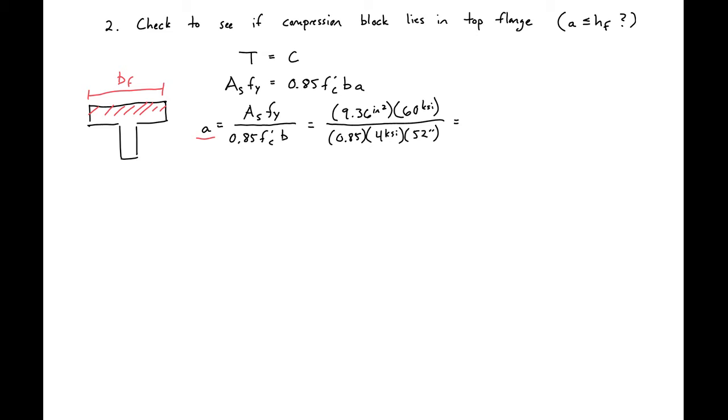We can find our a to be equal to 3.18 inches. So we can see that our a, 3.18, is greater than our flange height of 3 inches. So our compression block doesn't fall in the top flange alone. We're going to move down into our web, so we'll need to use our analysis procedure specific to T-beams where the compression block falls in the web region.